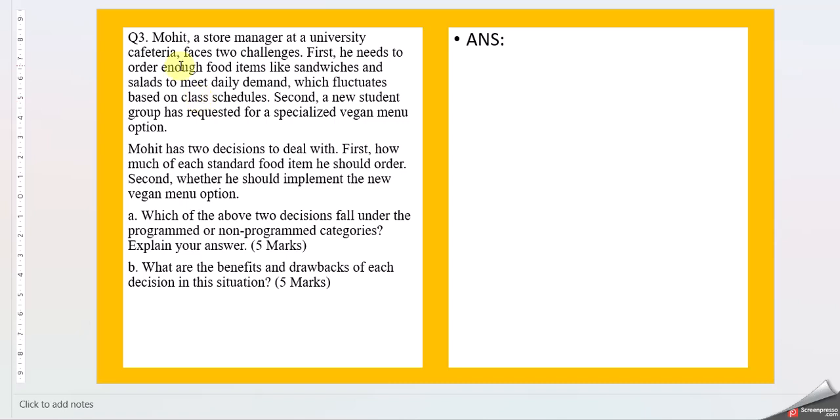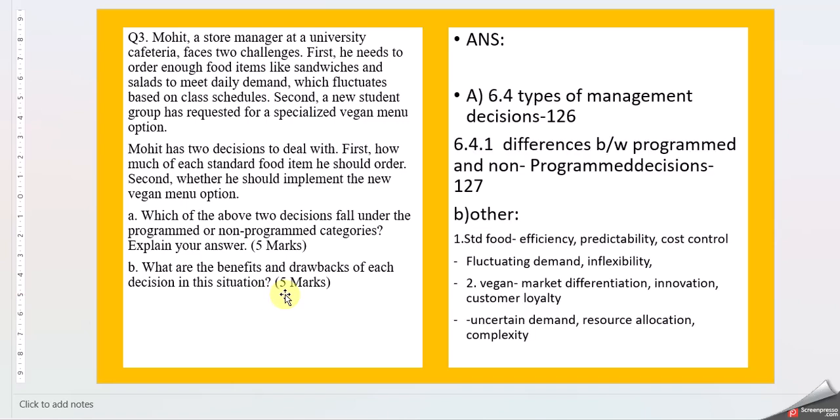Moving on to question three: Mohit, a store manager at a university cafeteria, faces two challenges. First, he needs to order enough food items like sandwiches and salads to meet daily demand, which fluctuates based on class schedules. Second, a new student group has requested a specialized vegan menu option. Mohit has two decisions: first, how much of each standard food item to order; second, whether to implement the new vegan menu option. Part A asks: which of these decisions fall under programmed or non-programmed categories? Explain your answer. Part B asks: what are the benefits and drawbacks of each decision in this situation?